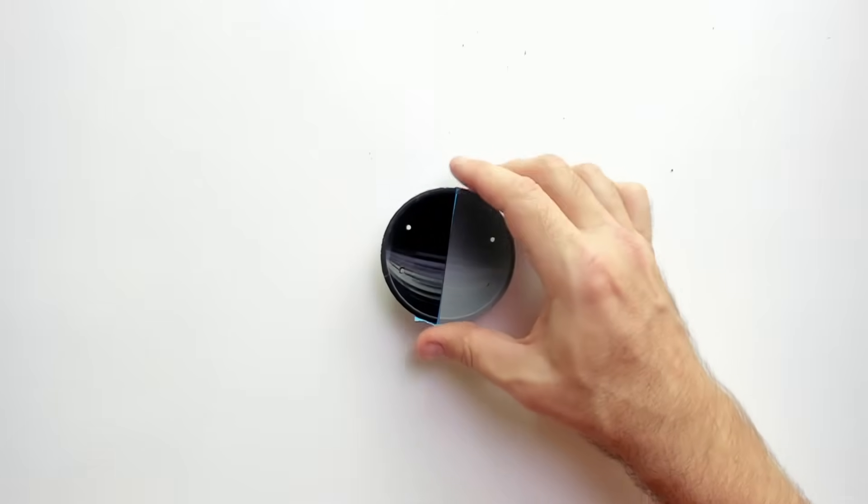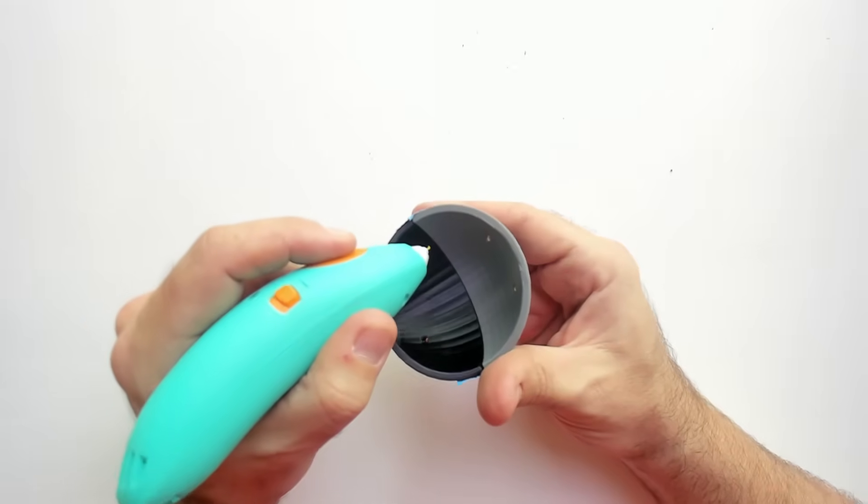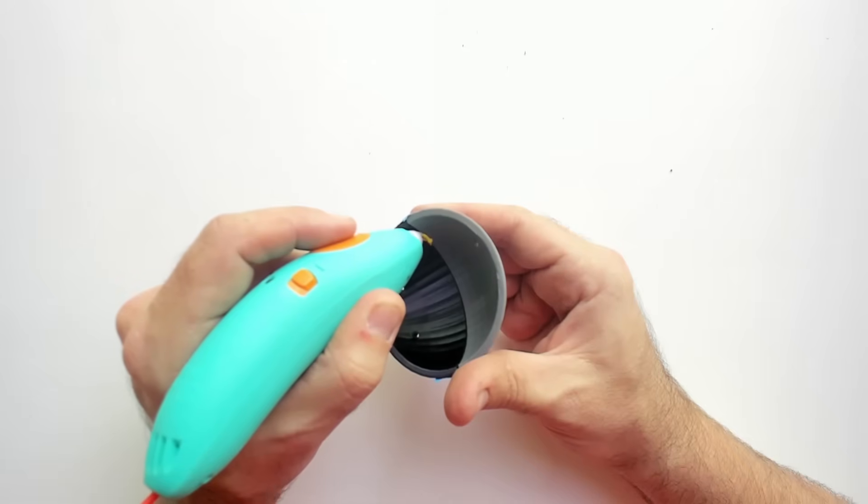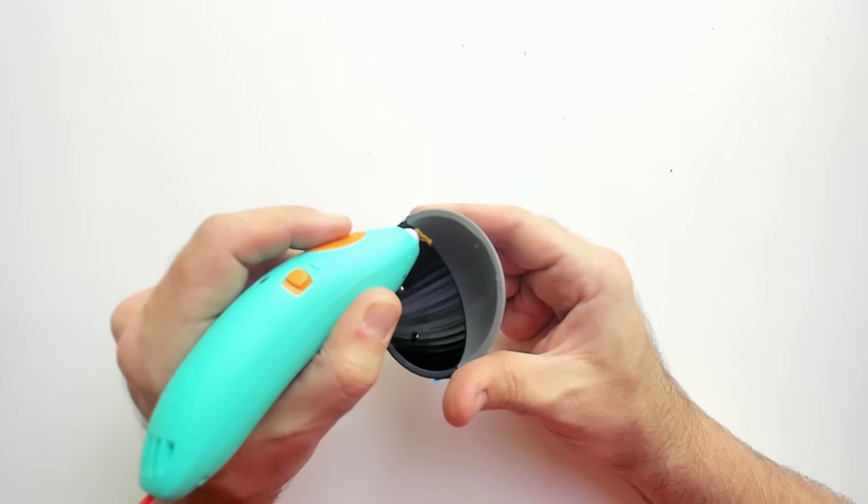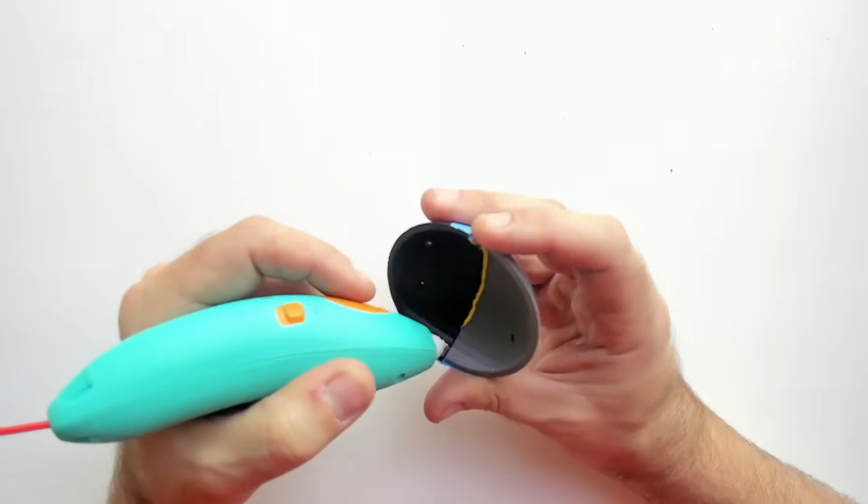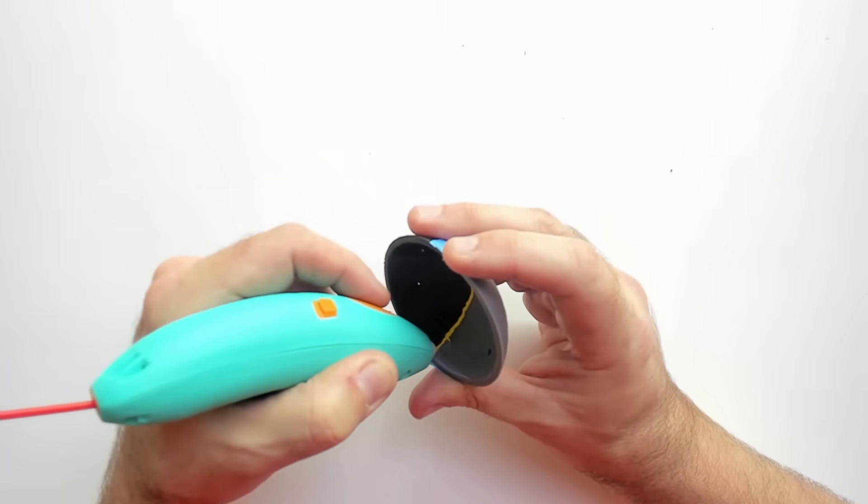And the fourth method is to use a 3D pen. I don't normally use a 3D pen so I just borrowed my daughter's to try this out. I was expecting red to come out but it looks like there was plenty of yellow left in the pen. The filament from the pen is easy to apply but it's not melting the parts like the last two methods so I'm not sure how well this is going to hold.